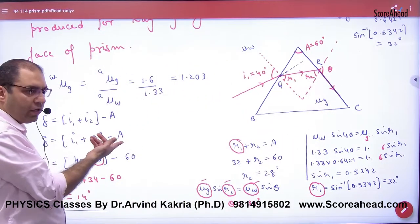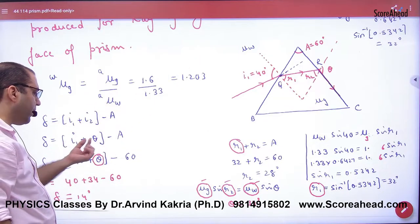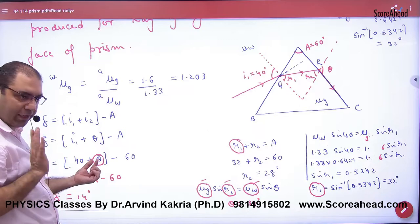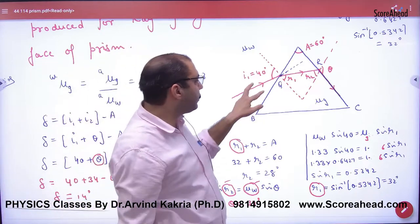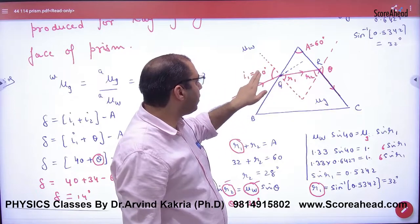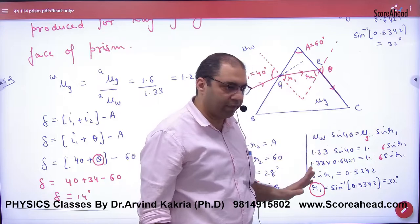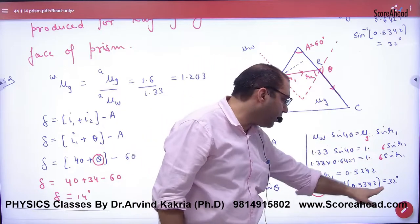Theta. We work to take out theta. Here we have Snell's law. How do we take out R₁? μ water into sin of 40 equals μ glass into sin of R₁. So we put values here to find R₁.